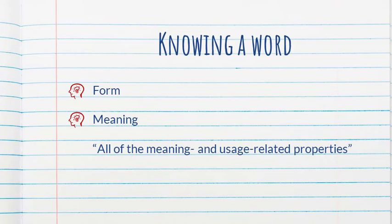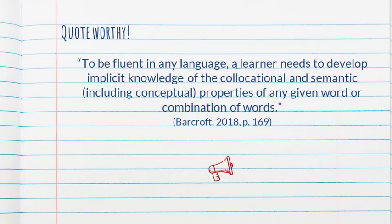It's also important to point out that it's not just about knowing the properties of a word, but rather how we understand and use the words. As the author points out in this quote: to be fluent in any language, a learner needs to develop implicit knowledge of the collocational and semantic — including conceptual — properties of any given word or combination of words. That is certainly an ambitious, lofty goal, and we're not going to get there in one lesson.